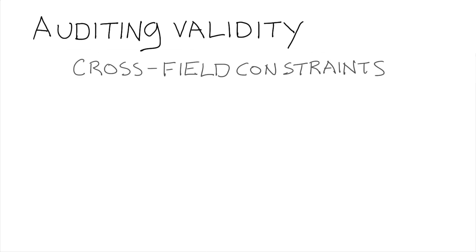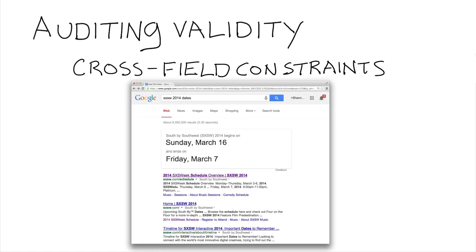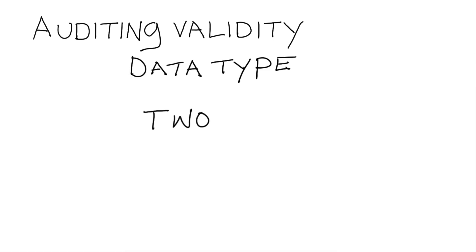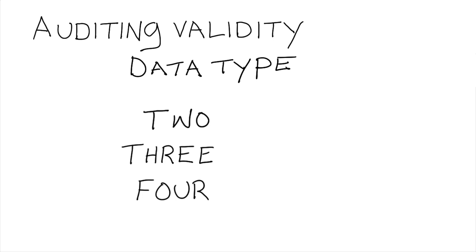We might have cross-field constraints — conditions on multiple fields. So for example, the start date must come before the end date. For most fields, we're also going to be expecting a specific data type, or a particular structure of some kind, if we're talking about JSON data, where fields can have values that are themselves dictionaries or arrays.